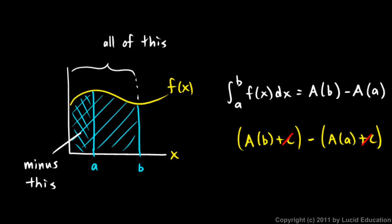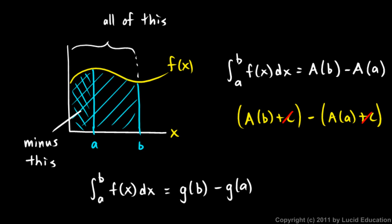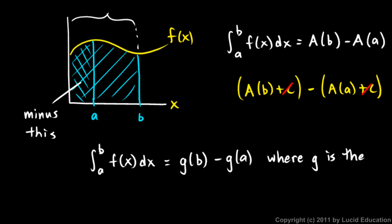The last step is to note that this area function we don't typically call A — we typically call it G. So we commonly write this as: the integral from a to b of f(x) dx is equal to G(b) minus G(a), where G is the antiderivative, or the integral, of f. And that is it — the fundamental theorem of calculus.